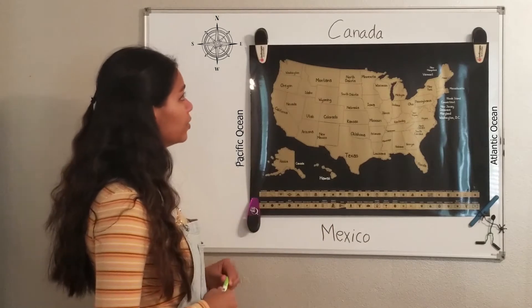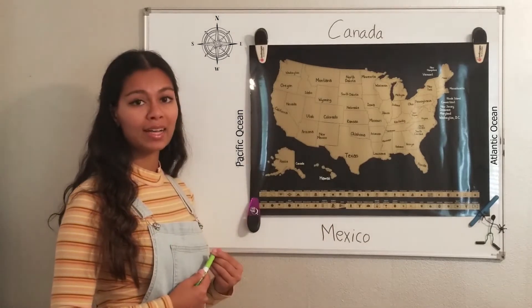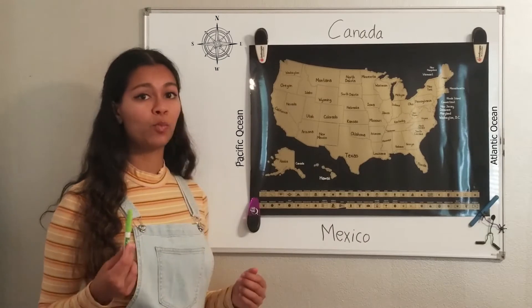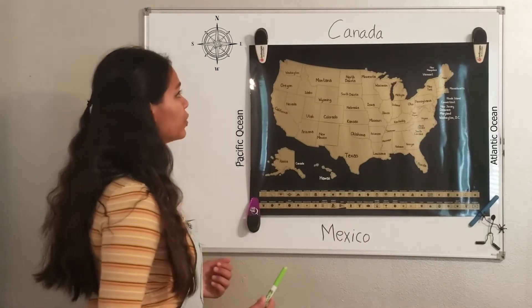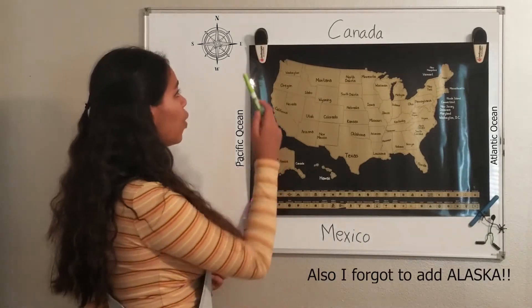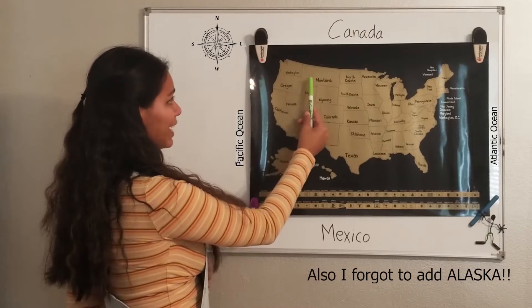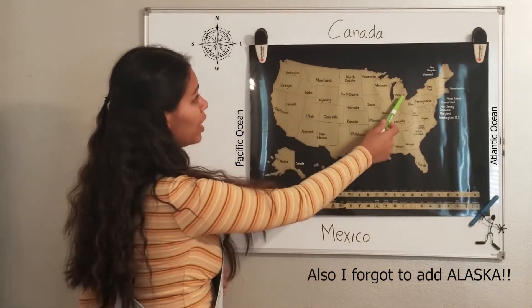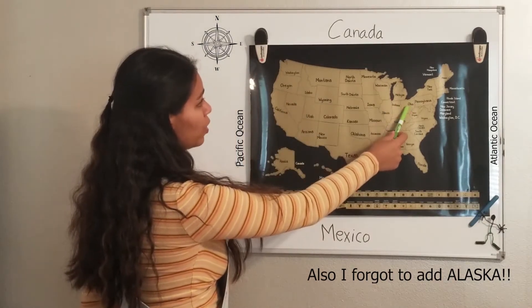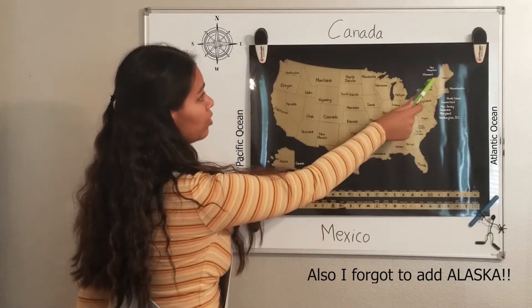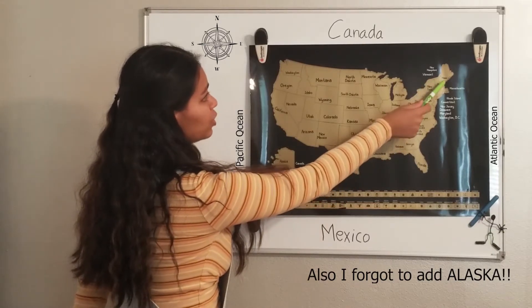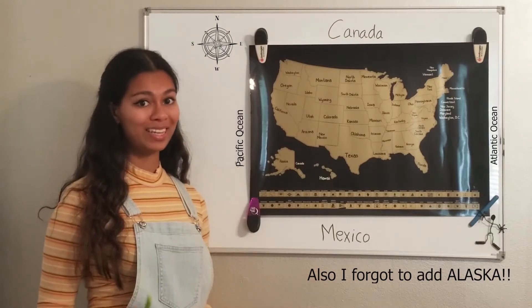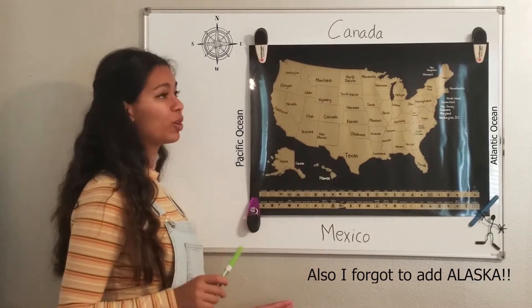There's a question on the test that asks what states border Canada — you have to name one. Those states are Washington, Idaho, Montana, North Dakota, Minnesota, Michigan, Ohio, Pennsylvania, New York, Vermont, New Hampshire, and Maine. Those are the states that border Canada.